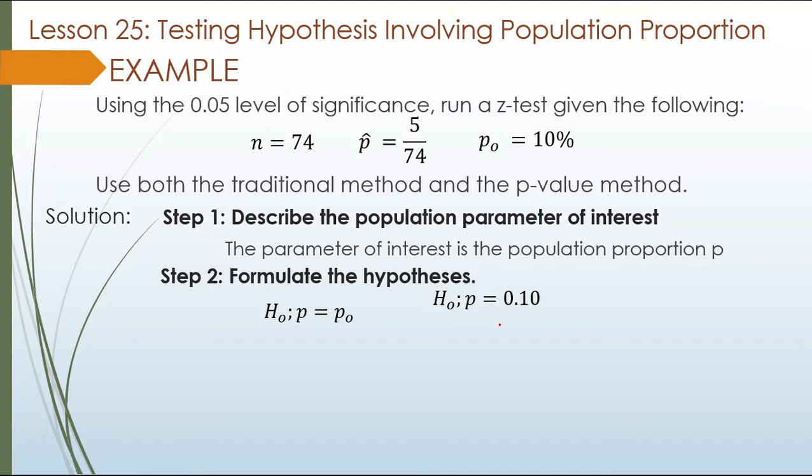For the alternative hypothesis: since there is no stated condition, it is not equal. So the alternative hypothesis is p not equal to p-sub-o, which is p not equal to 0.10. The 0.10 comes from the given p-sub-o.